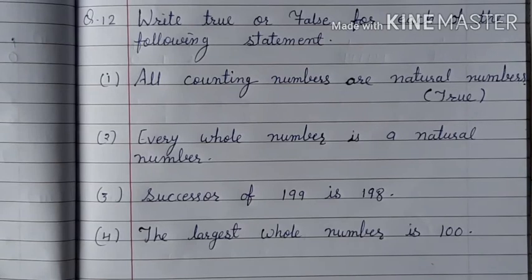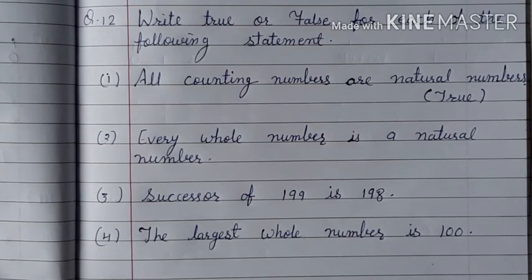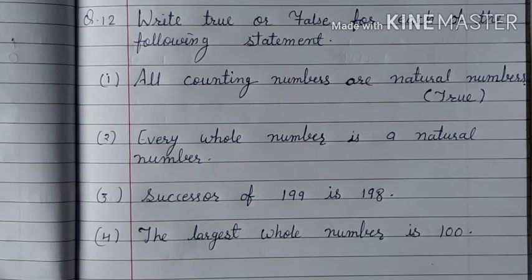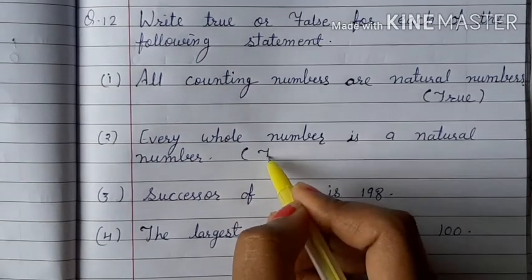Second one is every whole number is a natural number. So it is false. Because whole numbers include 0, and 0 is not a natural number. Natural numbers start from 1. Whole numbers start from 0. So it is false.